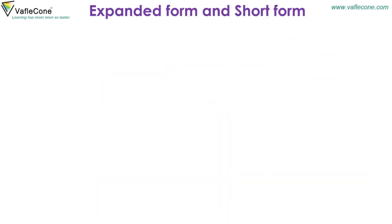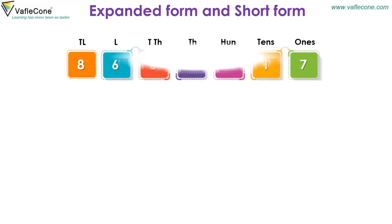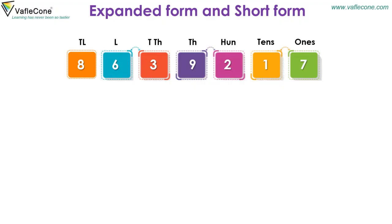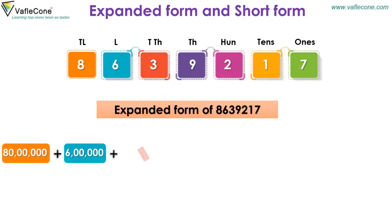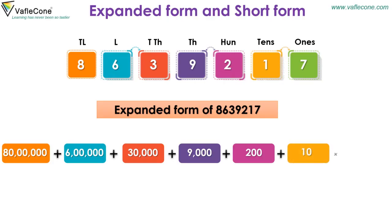Expanded form and short form. The expanded form of 86,39,217 is 80,00,000 + 6,00,000 + 30,000 + 9,000 + 200 + 10 + 7.